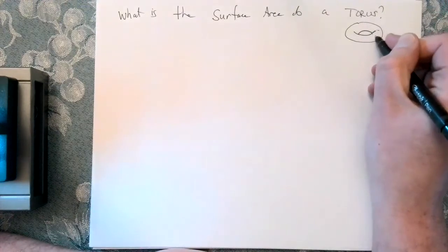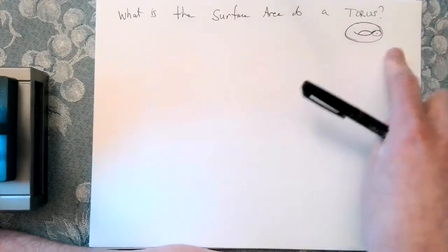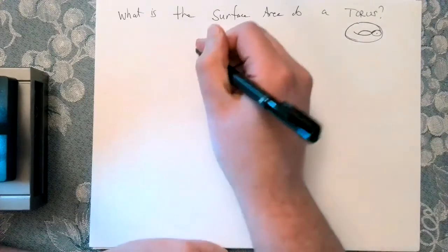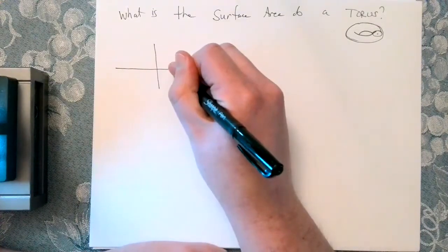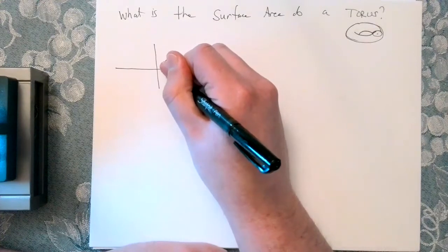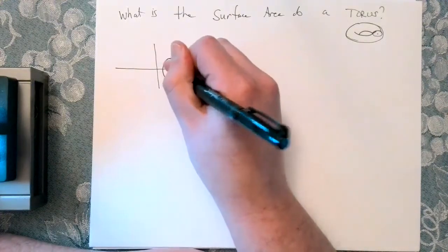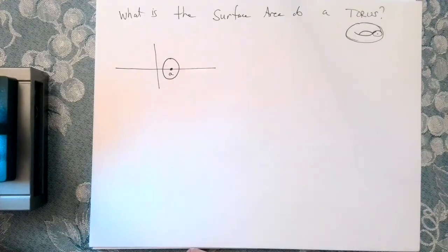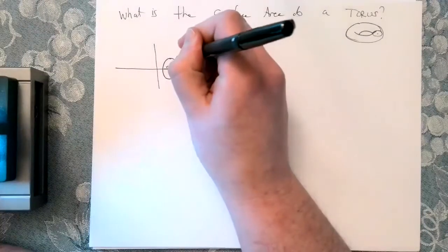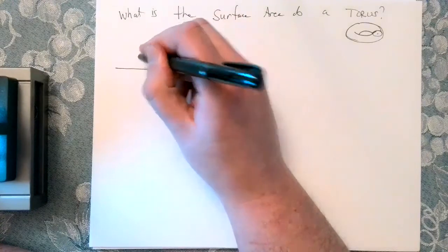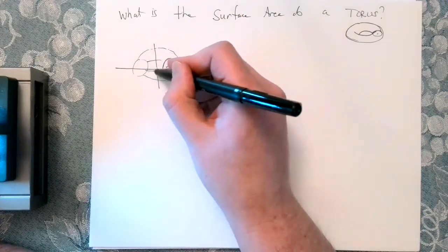So what is the surface area of a torus? So you can sort of imagine how to generate such a thing. You start with some circle. And then you spin it around. And that generates your donut or your torus. So let's start with a generating circle. Maybe we've got some circle like this. And let's say maybe the x value here is a. And maybe the radius here is r. And so if I spin this. You can imagine, hopefully, that I'm going to generate some sort of donut or torus.